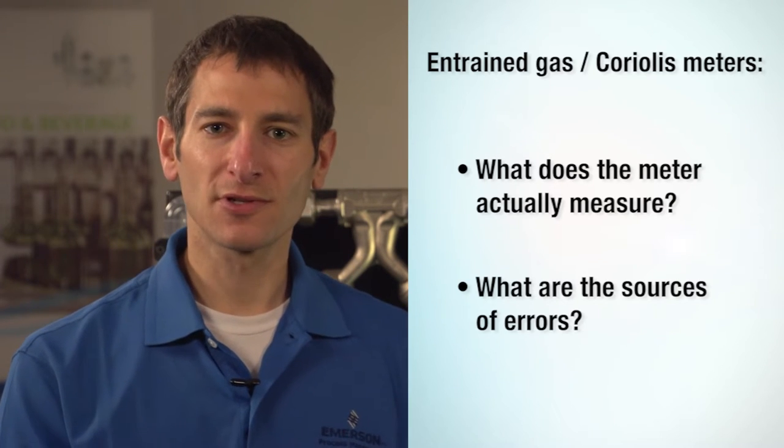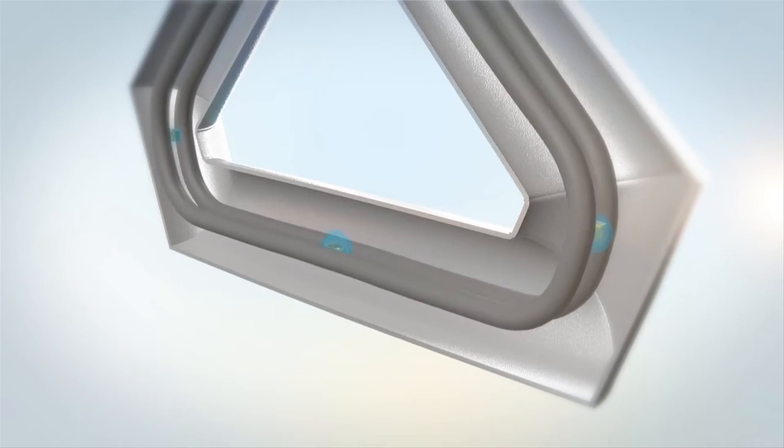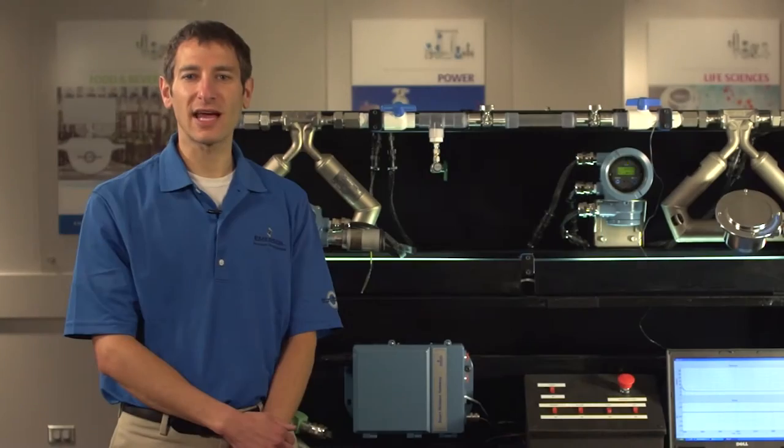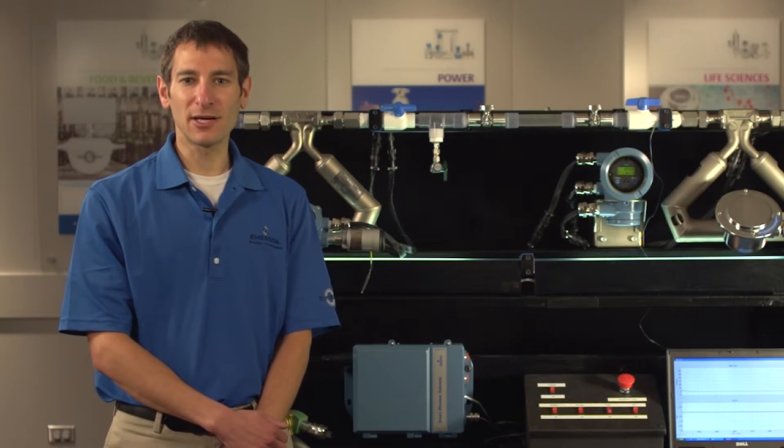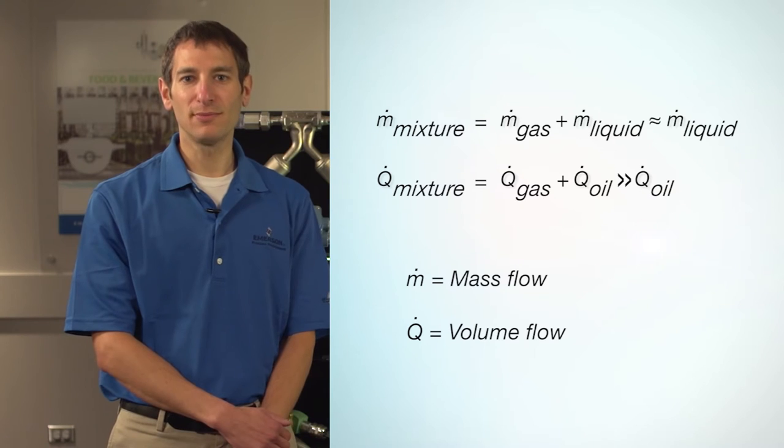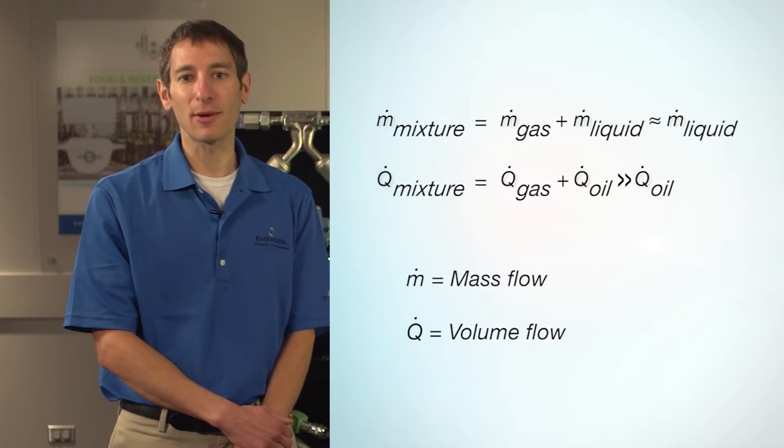As with all meters, Coriolis meters are only capable of measuring what goes through them. If the process fluid is a mixture of liquid and gas, then we accurately measure all mixture properties. We measure mixture mass flow, mixture density, and mixture volume flow all properly.